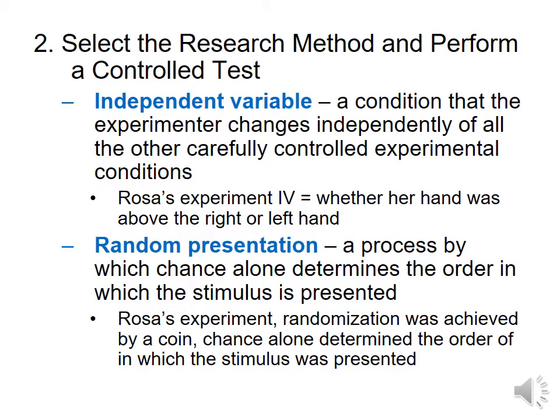Random presentation is a process by which chance alone determines the order in which a stimulus is presented. Randomization — making something random — is like pulling names from a hat. You want to make sure it's done without intent. So anything that is random, there is no intent — it is done without intent.